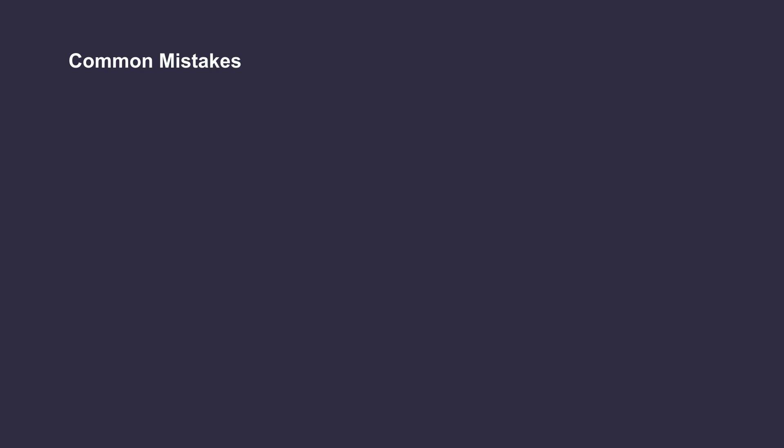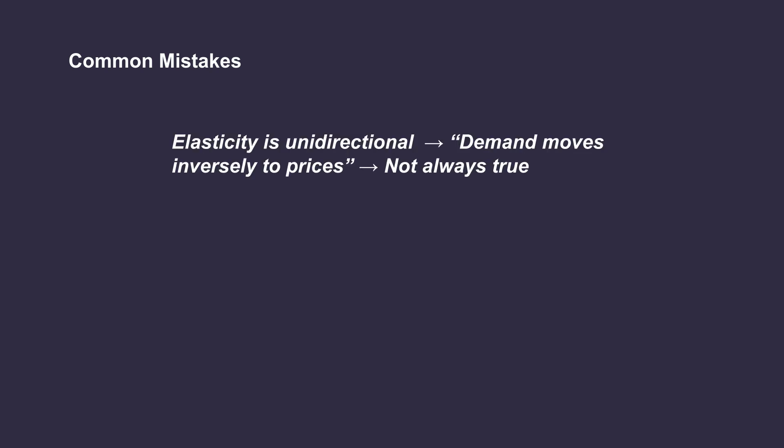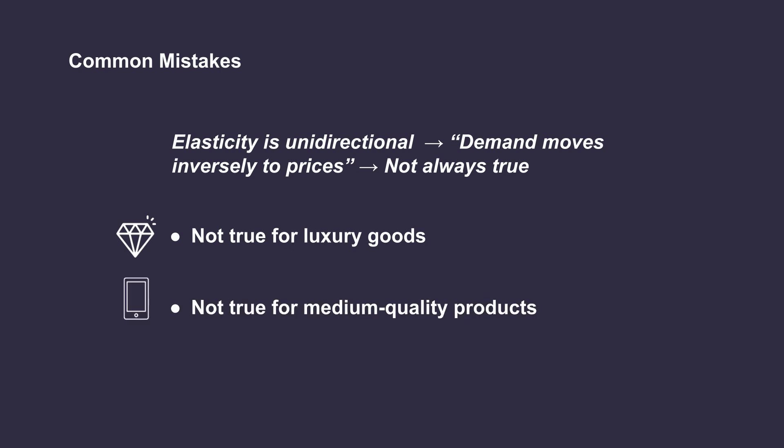Some common mistakes about elasticity. First: elasticity is unidirectional. In general, yes, but there can be exceptions. Unidirectionality means, for instance, that demand would always move inversely to prices — but this is not always true. For luxury goods, a price increase might be perceived as a sign of quality and nurture additional demand. For medium-range products like a phone, decreasing prices will not always lead to increased demand, because consumers may interpret it as a sign of lower quality.